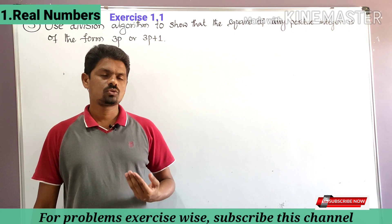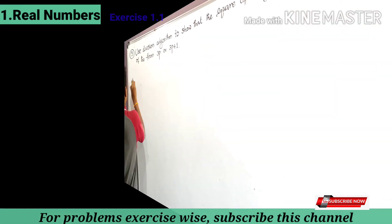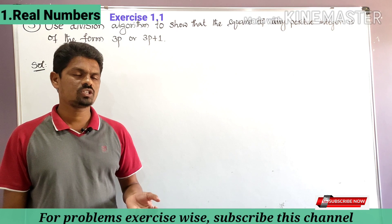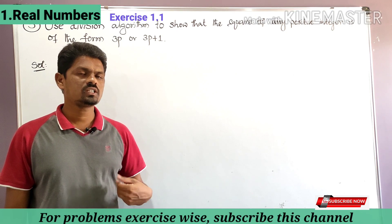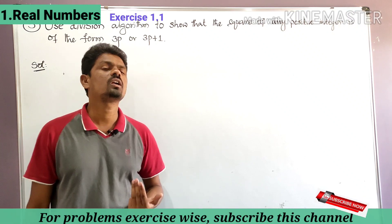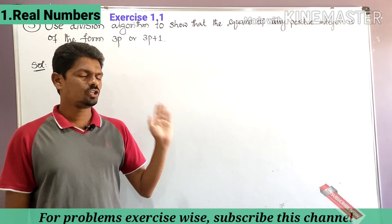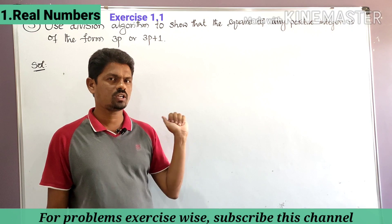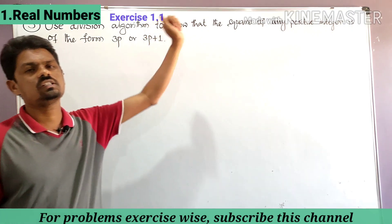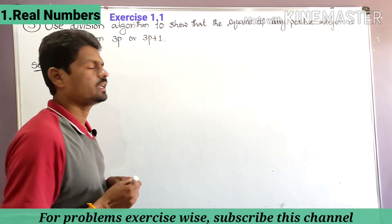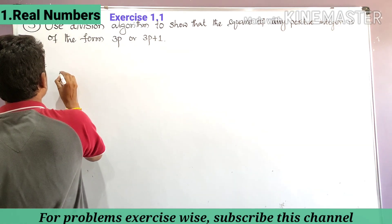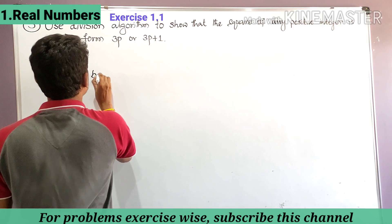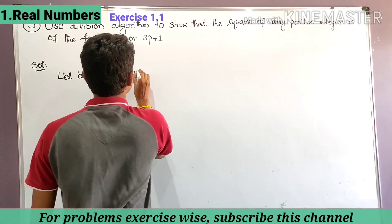We have to solve this using Euclid's Division Lemma. For any two positive integers a and b, there exist two non-negative integers q and r such that a is equal to b into q plus r, where the condition is 0 is less than or equal to r is less than b. Using Euclid's division algorithm, we have to show that the square of any positive integer is of the form 3p or 3p plus 1. Let small a be any positive integer.